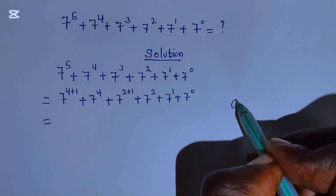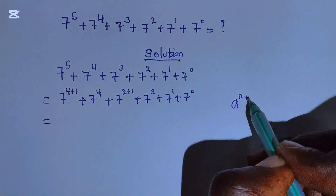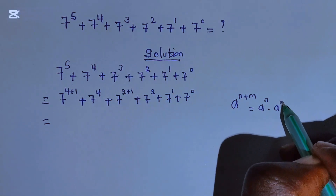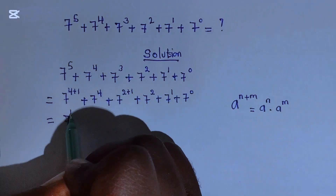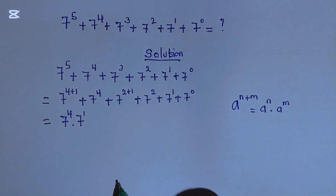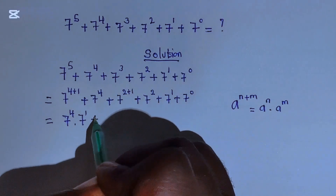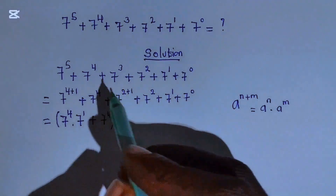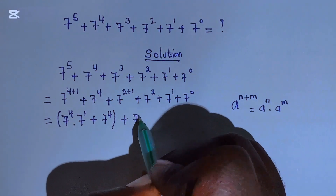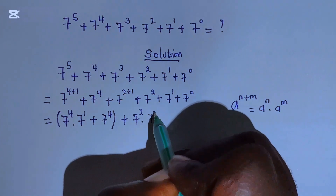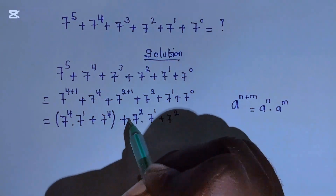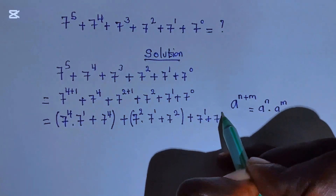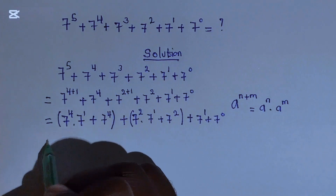The law of indices says that when you have a to the power of n plus m, this is equal to a to the power of n times a to the power of m. So this will be equal to 7 to the power 4 times 7 to the power of 1, plus 7 to the power of 4. And here, plus 7 to the power of 2 times 7 to the power of 1, plus 7 squared, then plus 7 to the power of 1, plus 7 to the power of 0.